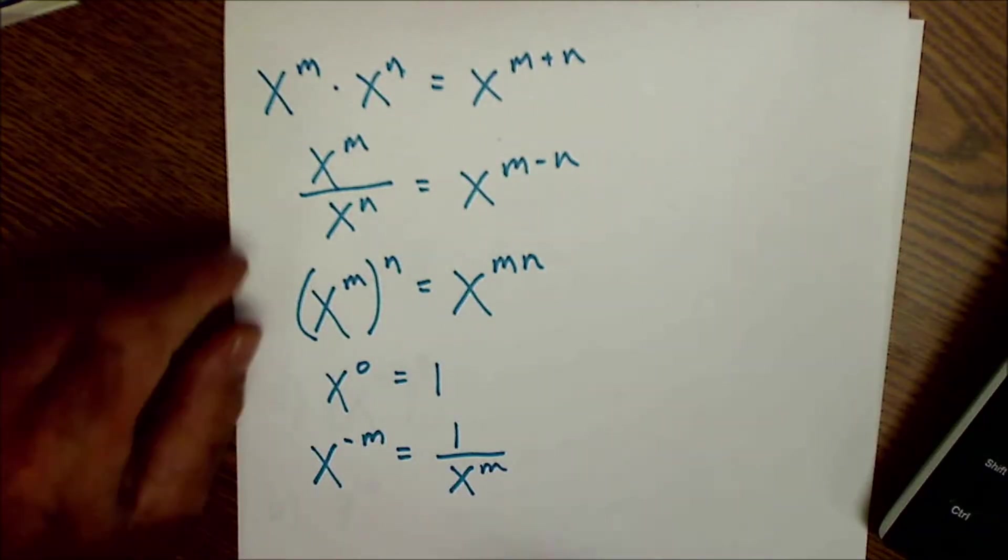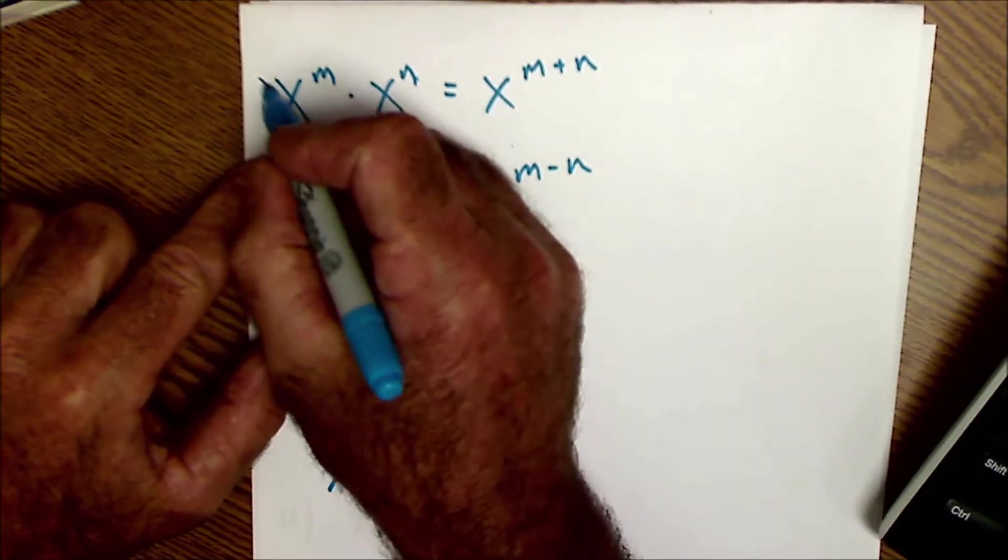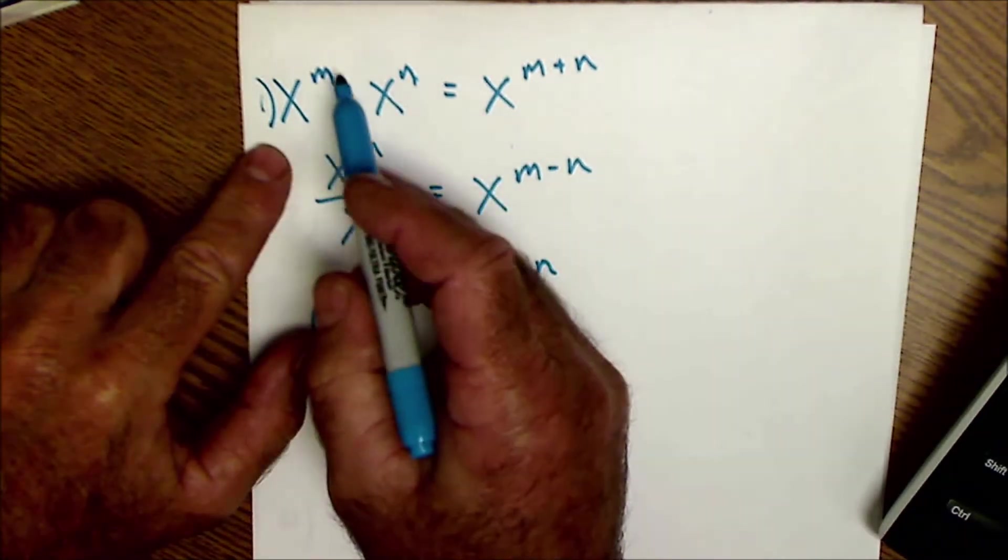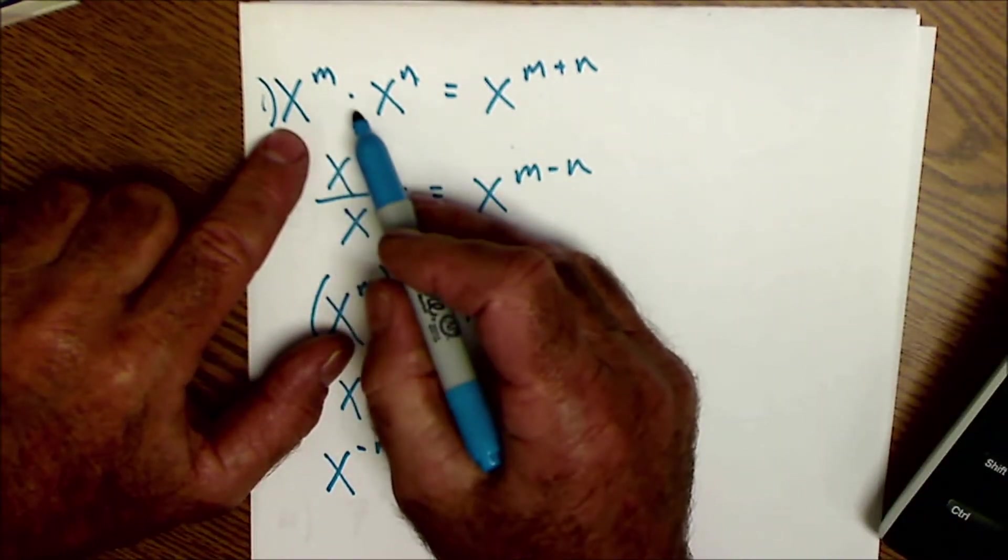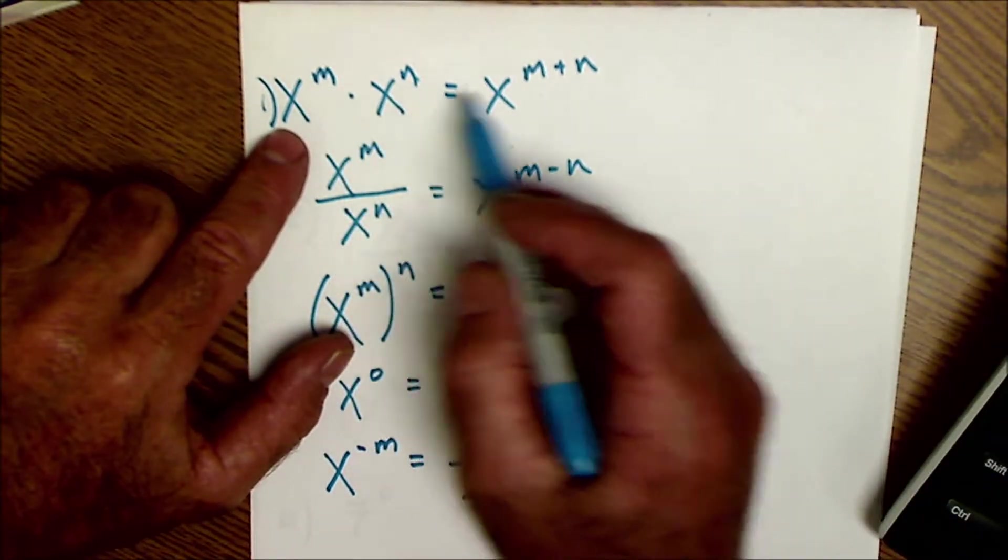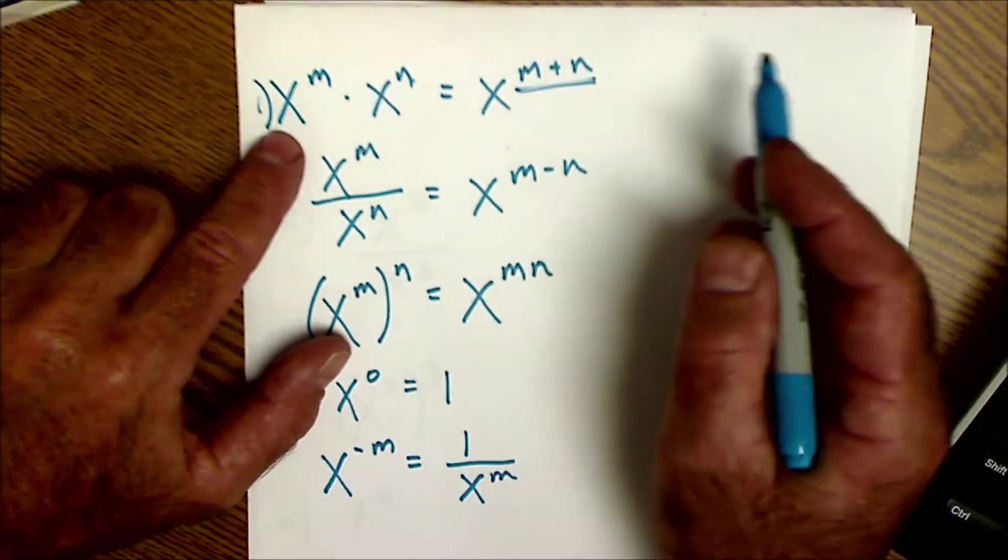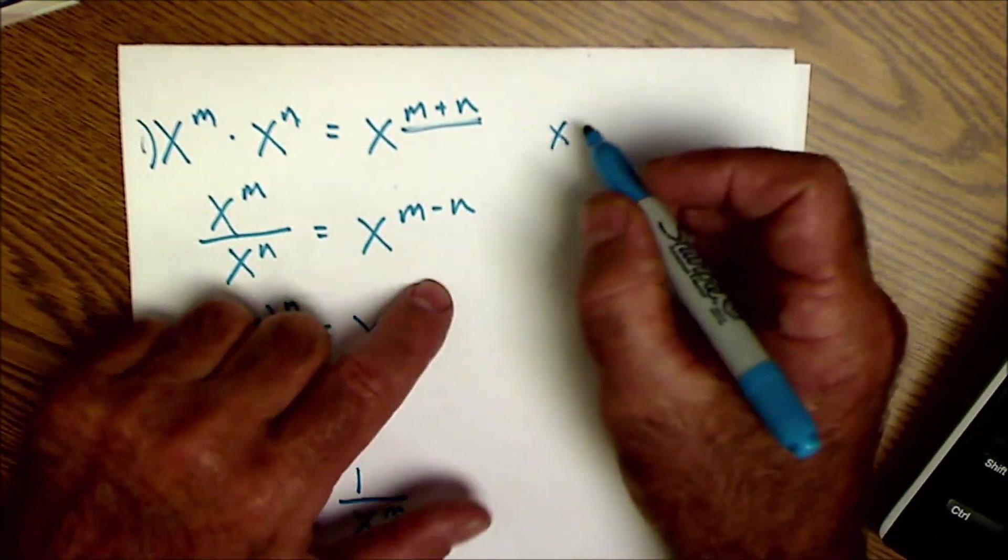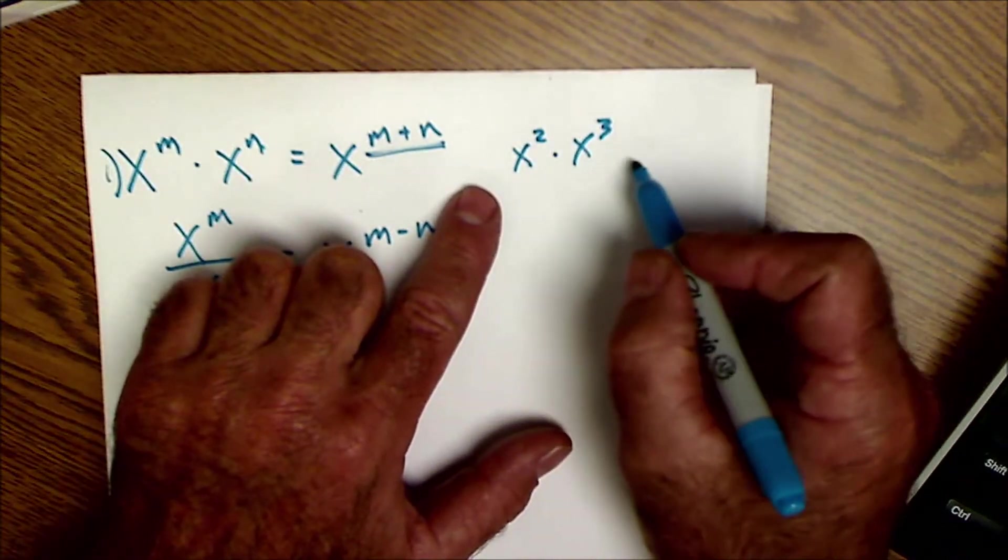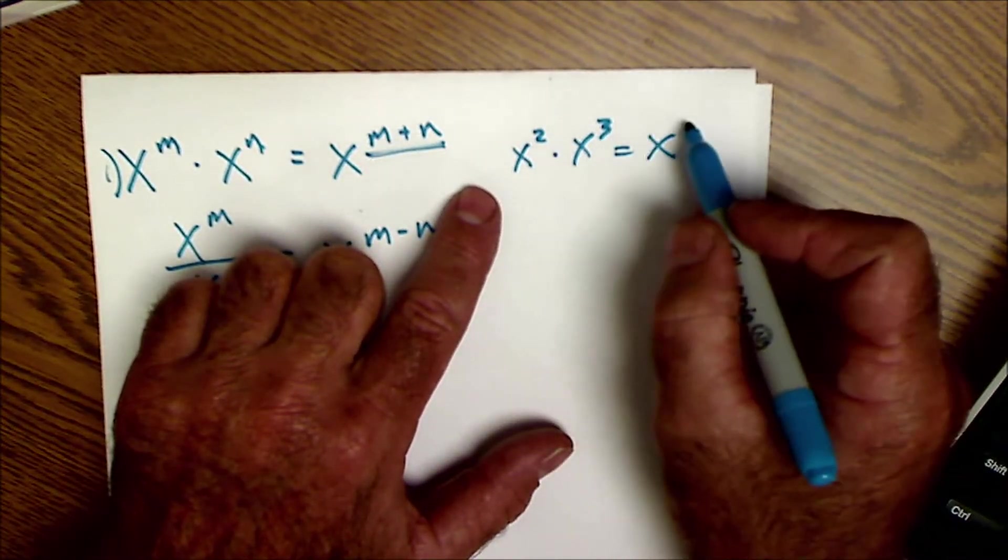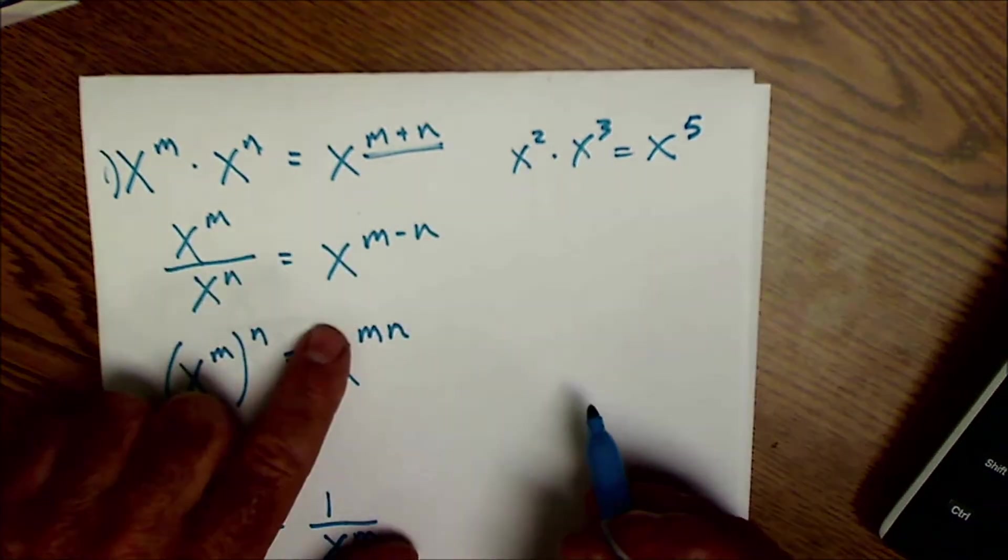Let's take a look at the five rules of exponents. So this x is the base to the power of m, that's the exponent. And so if I have x to the m times x to the n, I add those exponents together. So if I had something like x squared times x to the third, I would keep that same base of x, add those exponents together to get 2 plus 3 or 5.